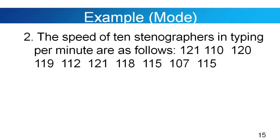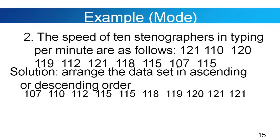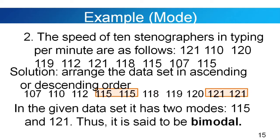Example number 2. The speed of 10 stenographers in typing per minute are: 121, 110, 120, 119, 112, 121, 118, 115, 107, 115. Arranging in ascending order: 107, 110, 112, 115, 115, 118, 119, 120, 121, 121. Both 115 and 121 appeared twice in the data set. The data set has two modes — 115 and 121 — and is said to be bimodal.